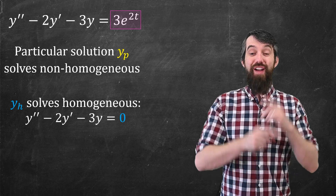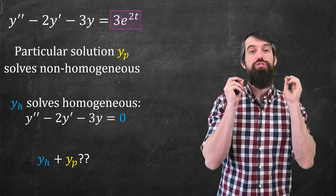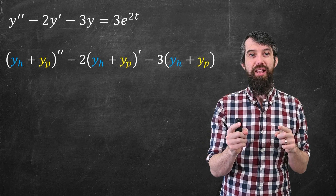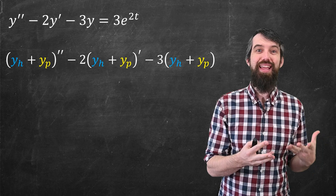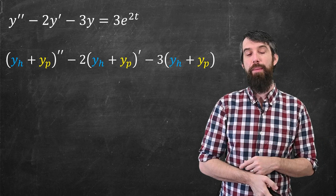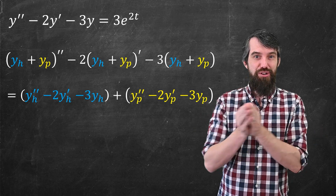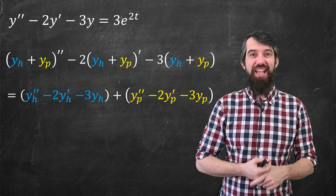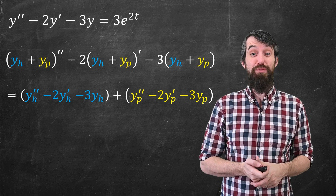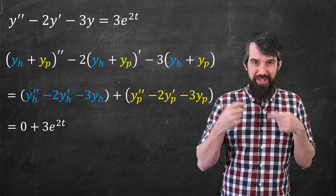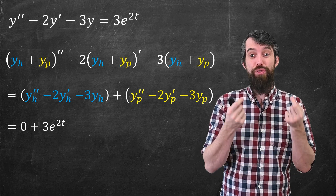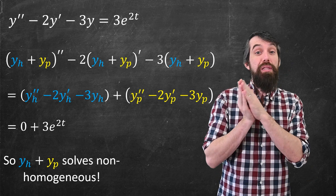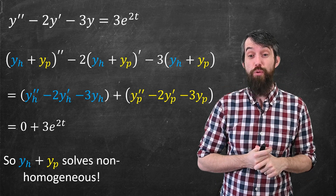I want to consider what happens if I add those two things together — the homogeneous solution plus the particular. I can just plug this in. I take the left-hand side and everywhere plug in the homogeneous plus the particular solution: two derivatives of that thing minus two times one derivative of that minus three. I can separate the two different sides — everything with the homogeneous solution together and everything with the particular solution together. Since y sub h is a solution to the homogeneous, that portion adds up to zero. And since y sub p solves the non-homogeneous, that portion adds up to 3e to the 2t. Thus, the homogeneous plus the particular is a solution to the non-homogeneous equation.